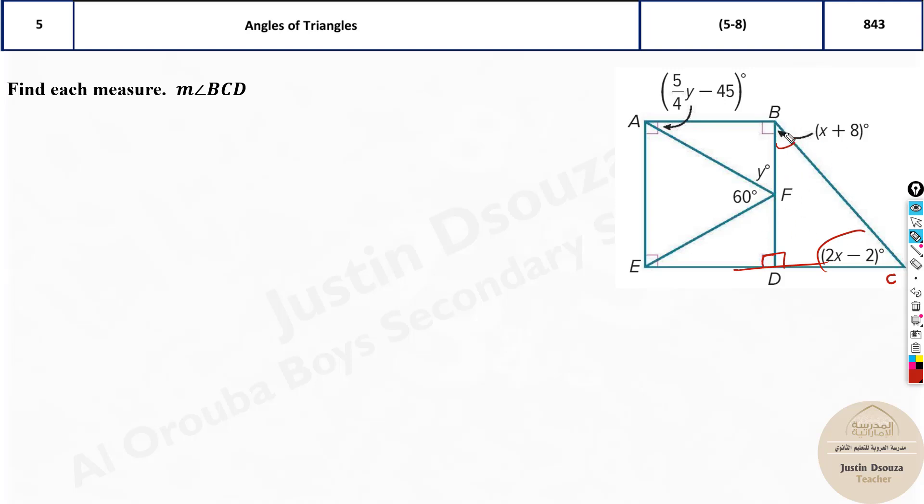Will we be able to solve for BCD with this much information? Yes, because it's a triangle. When you add up all the angles, that is D plus B plus C, what happens? It's 180 degrees. So we know D is 90, B is x plus 8, and C is 2x minus 2. This will be 180.